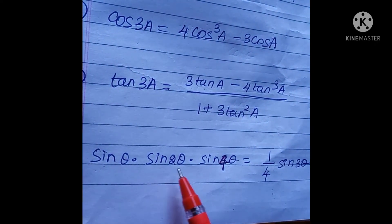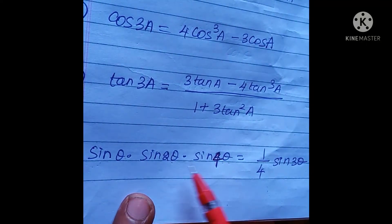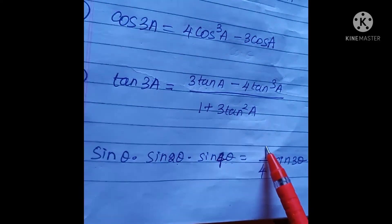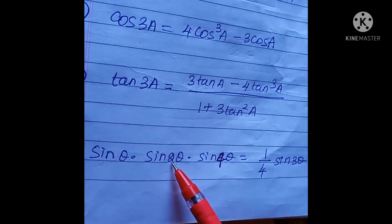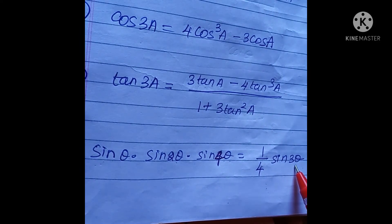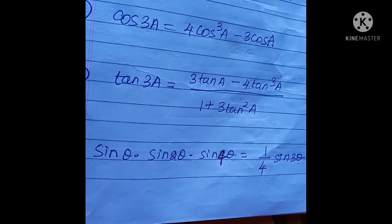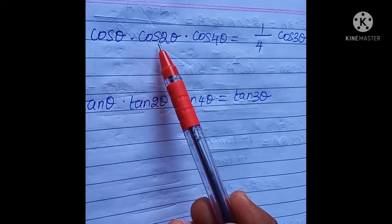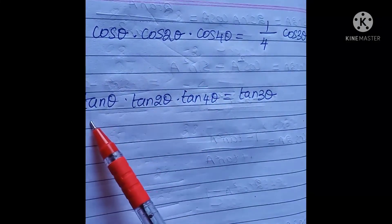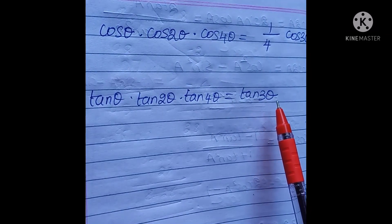Two important questions: sinθ · sin2θ · sin4θ simplifies to (1/4) sin3θ. cosθ · cos2θ · cos4θ = (1/4) cos3θ. And tanθ · tan2θ · tan4θ = tan3θ.